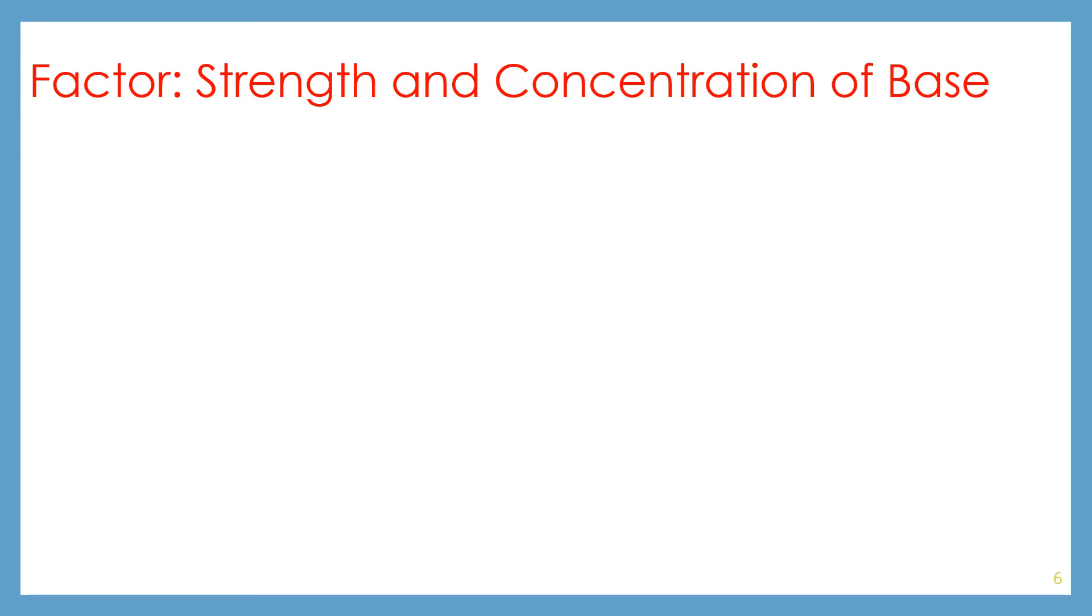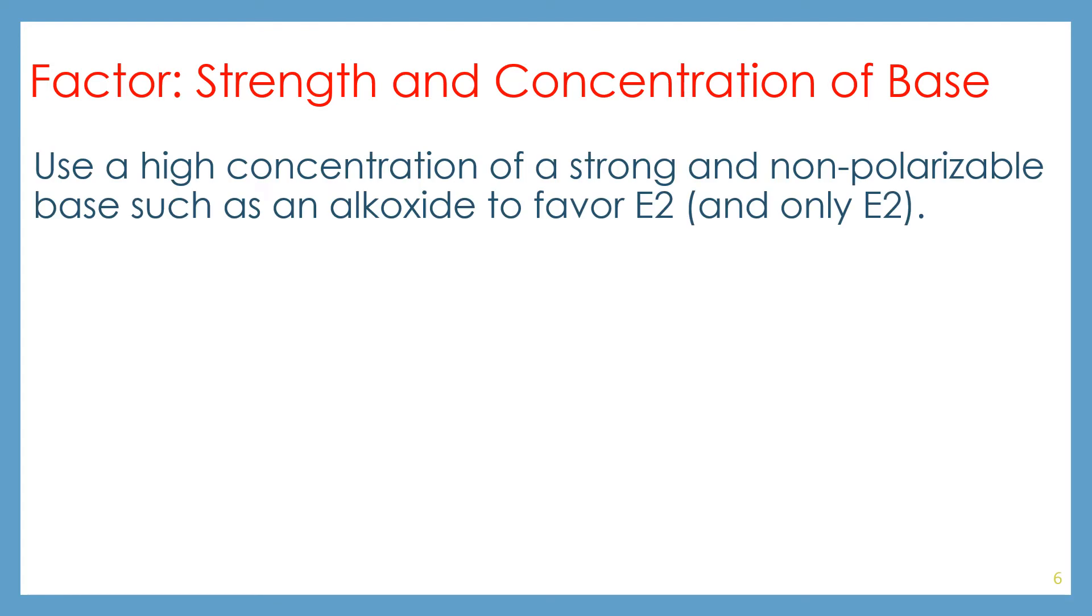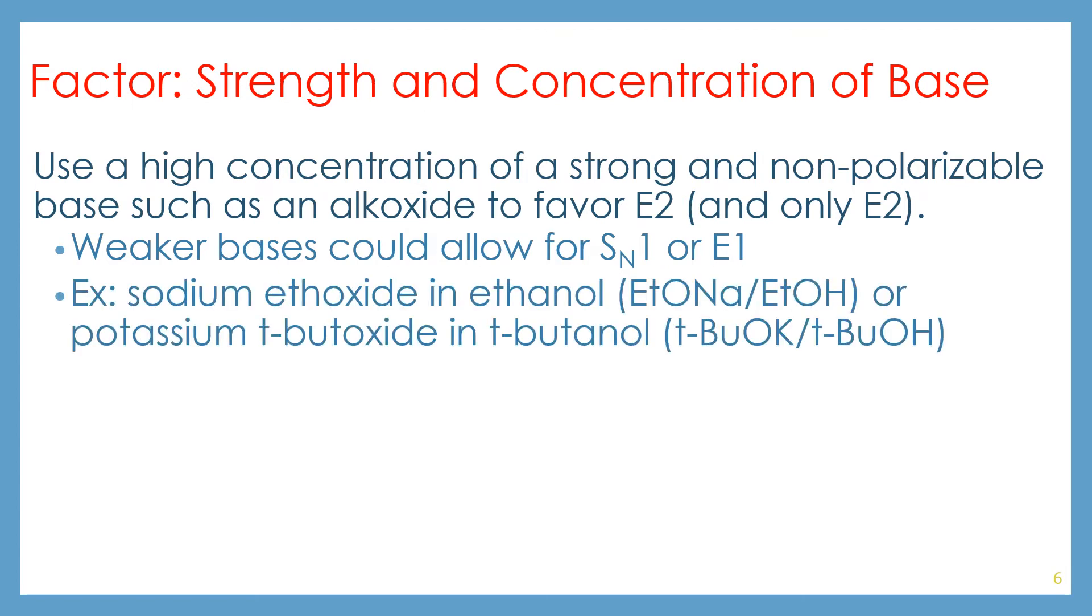So the next factor is the strength and concentration of the base. Using a high concentration of a strong and non-polarizable base, such as an alkoxide, will favor E2 and only E2. Weaker bases can allow for SN1 or E1. For example, sodium ethoxide and ethanol, or potassium t-butoxide and t-butanol, are both examples of stronger bases that are more likely to participate in elimination.